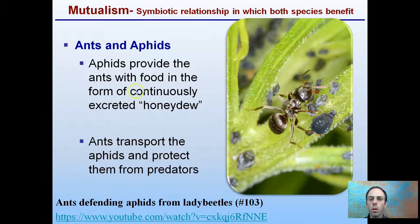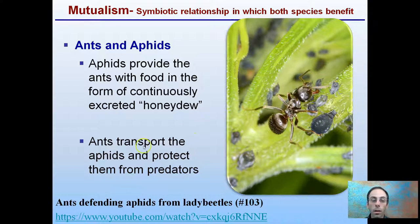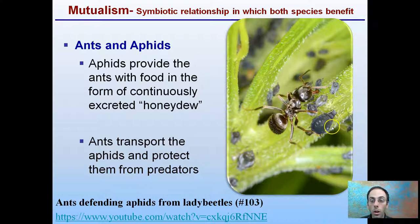Mutualism is the symbiotic relationship in which both species benefit. We have our ants and our aphids here. Aphids provide the ants with food in the form of continuously exuded honeydew — they're piercing the plant and giving the ants very easy honeydew access. The ants transport the aphids and protect them from predators. The ants are protecting those aphids because they're the ones providing the honeydew, the sugar. So both are benefiting: the ants get the honeydew and the aphids get protection.